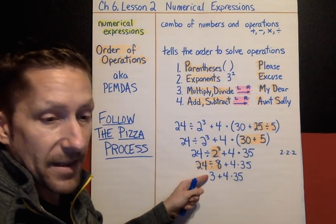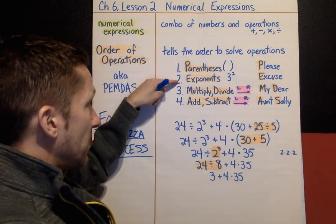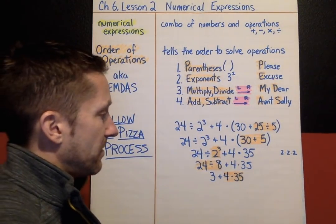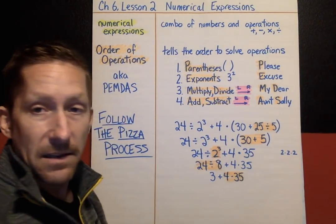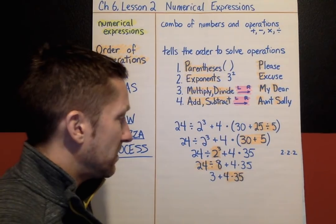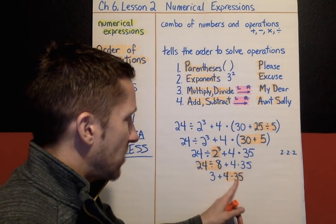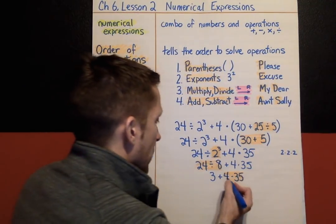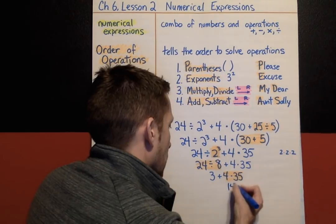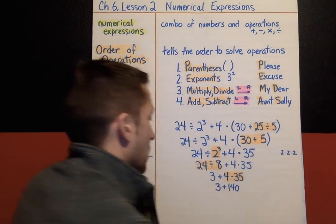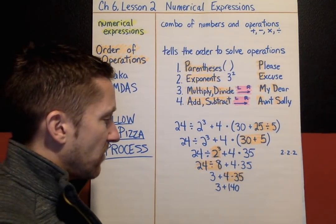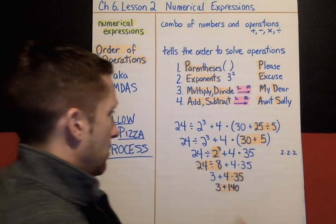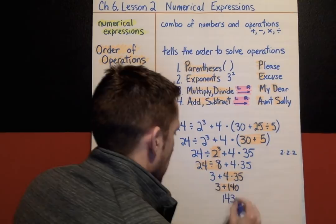24 divided by 8 turns into 3, and everything else gets copied: 3 plus 4 times 35. No parentheses, no exponents. I do have multiplying, so that comes next. My next pepperoni is 4 times 35. Mentally: 4 times 30 is 120, 4 times 5 is 20, so that turns into 140. Now my expression is just 3 plus 140. My final pepperoni is 3 plus 140. The answer is 143.